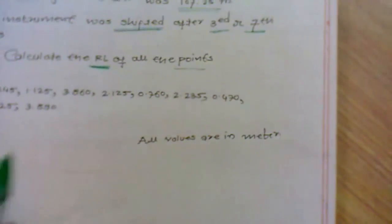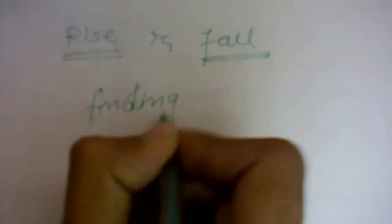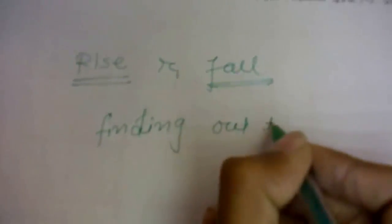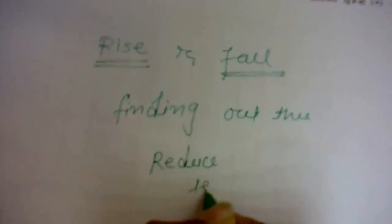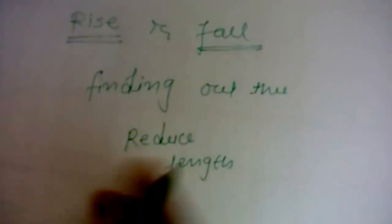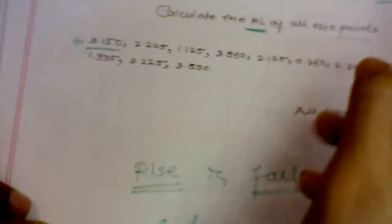All values are in meters. So, rise and fall method. This method is dealing with finding out the reduced length.